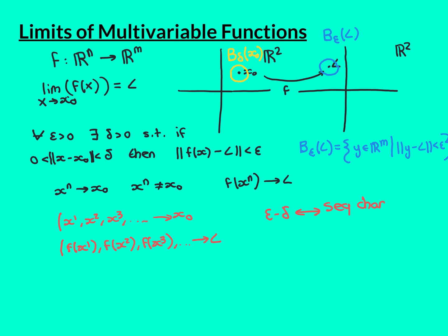To go over the argument again: if I take my epsilon ball around the limit vector L, there will exist a delta ball around x0 such that everything in that delta ball apart from x0 itself is mapped into this epsilon ball around L. Because this sequence converges to x0, there will exist some term such that it and everything beyond it is inside that delta ball — using that delta as the epsilon in the epsilon definition of convergence to x0. Then looking at the analogous term in the image sequence, from that term onwards everything must be in the epsilon ball, because the things being mapped are inside the delta ball and are not x0 itself.